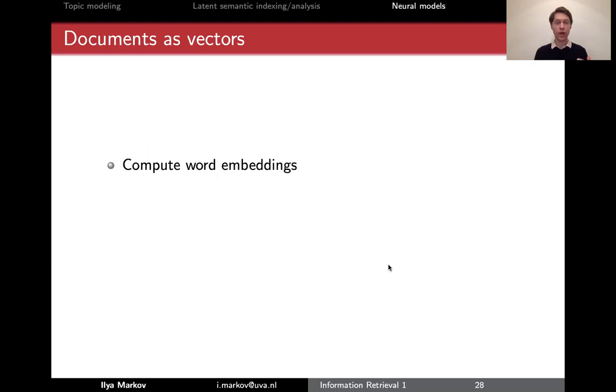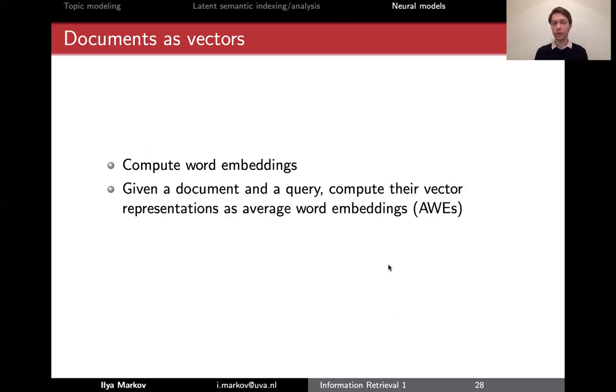So what is the way? First, we compute word embeddings according to the previous two models, and those models are from NLP. Then actually, when we have queries and documents, the simplest way to aggregate the word embeddings into document embedding is through average word embedding. So if you have the queries, it's more obvious. If you have, let's say, three words in a query, you just take an average of those three words, an average vector, and that will be the vector representation of the query. Obviously, for large documents, for documents longer than 100 words,